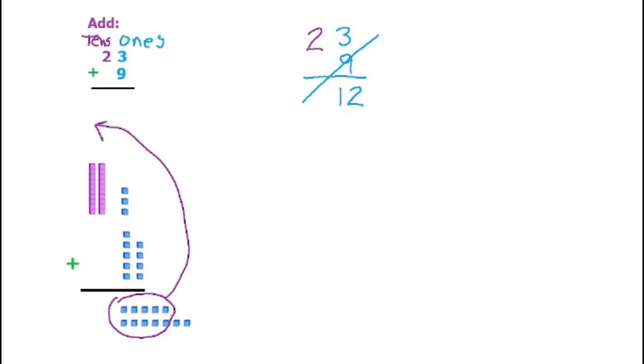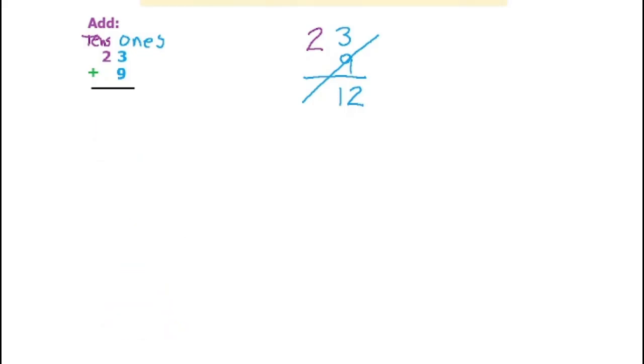So how would that look? It would look like this. We would now have 3 in the tens, so 30. And then we would only have 2 left here.